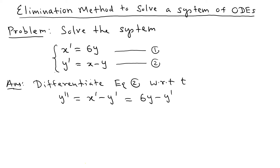Bringing all terms to one side: y double prime plus y prime minus 6y equals 0. This is a second-order constant-coefficient differential equation. To solve it, we look at the characteristic equation.